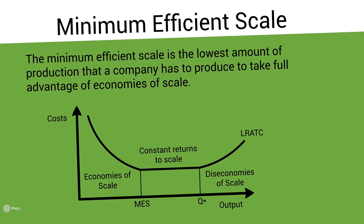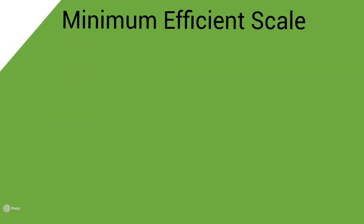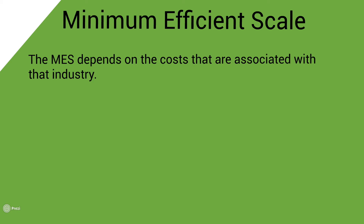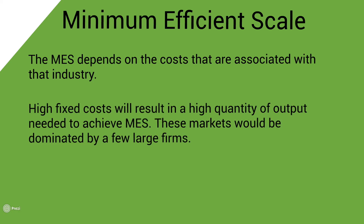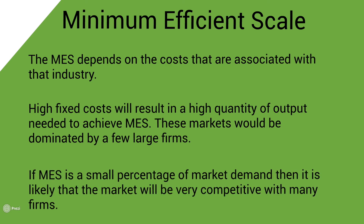What determines the minimum efficient scale? The minimum efficient scale depends on the costs associated with that industry. High fixed costs will result in a high quantity of output needed to achieve minimum efficient scale, and these markets will be dominated by a few large firms — either monopolies or oligopoly markets. If minimum efficient scale is a small percentage of market demand, then it is likely that the market will be very competitive with many firms.